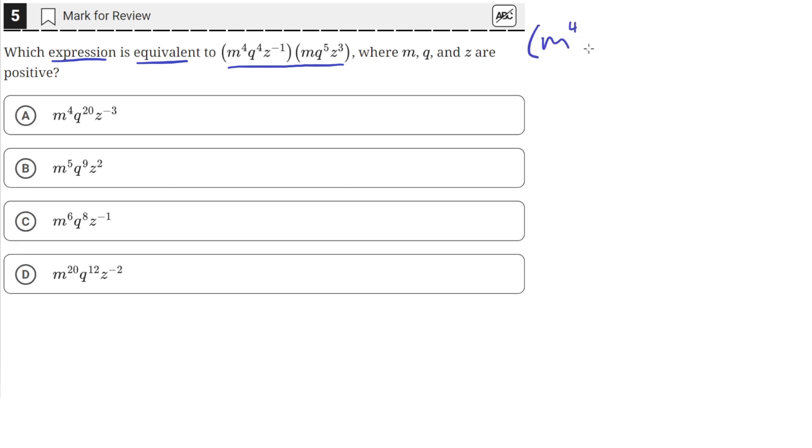M to the fourth, q to the fourth, z to the negative one, times m times q to the fifth, times z to the third.